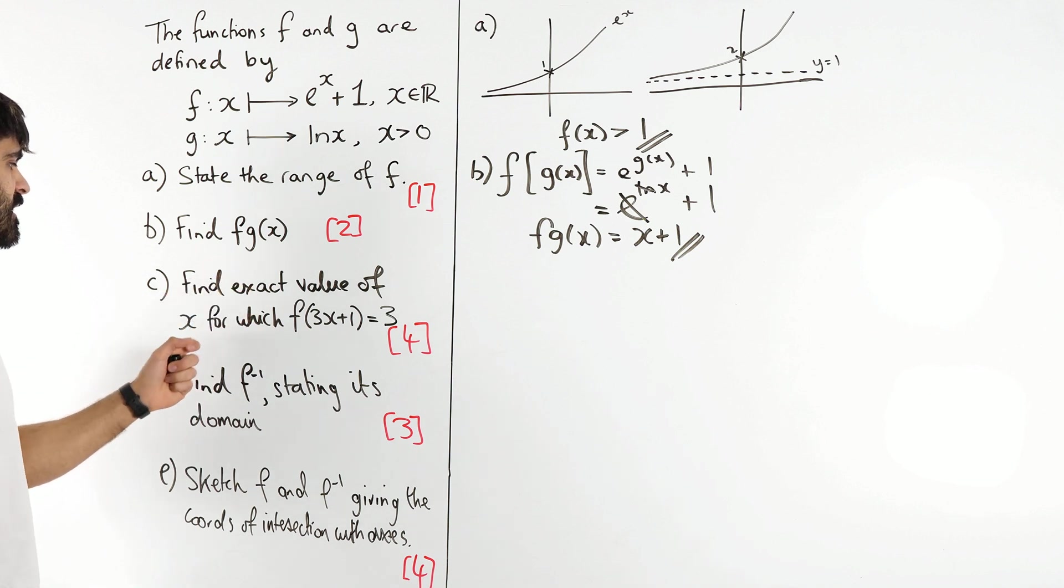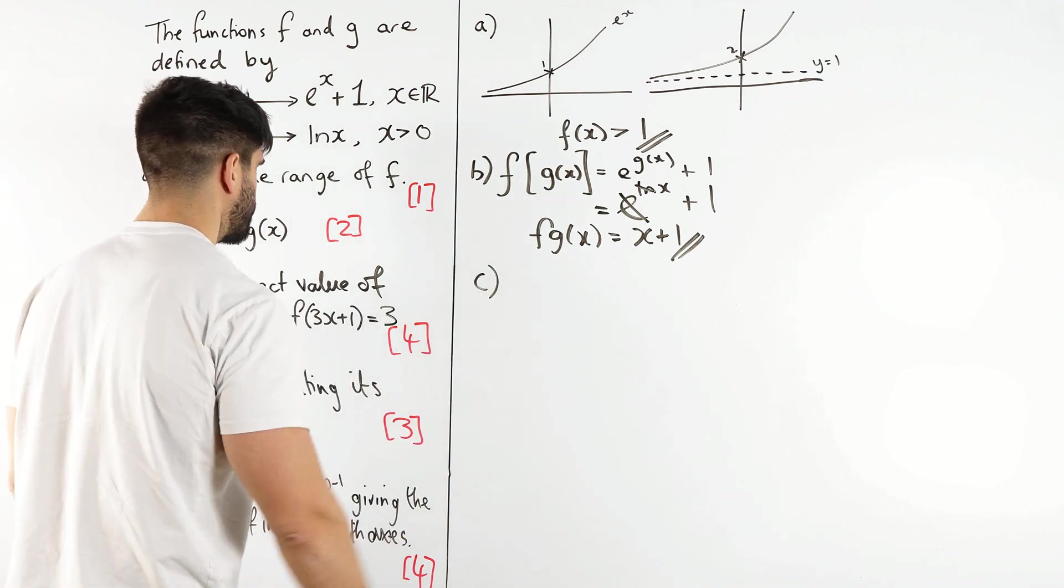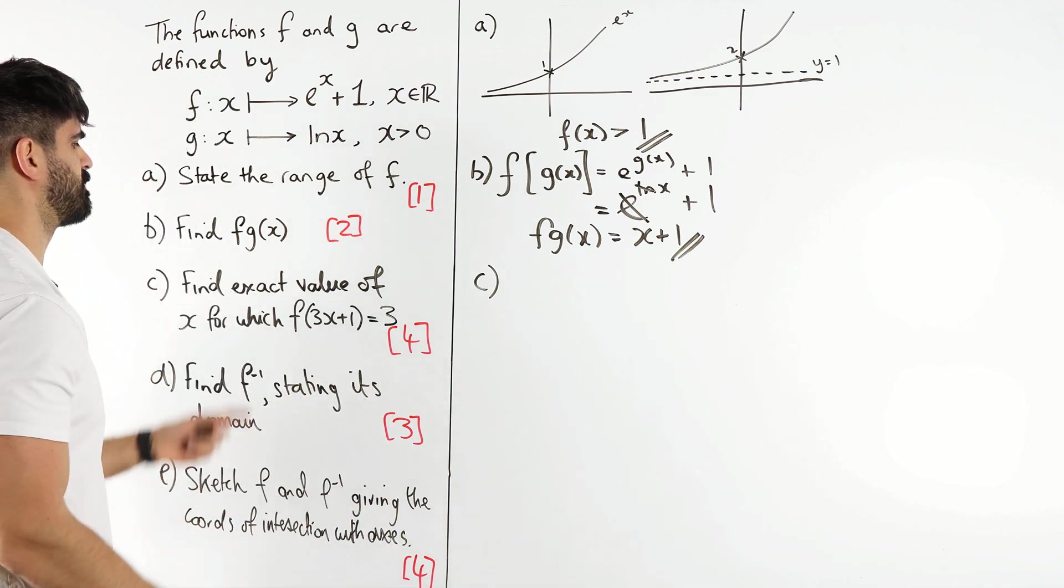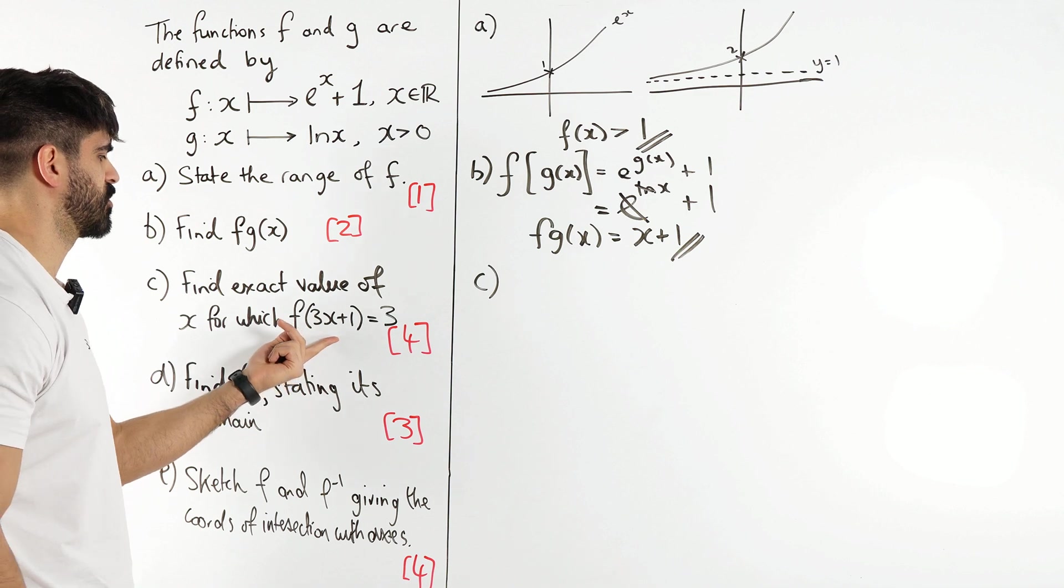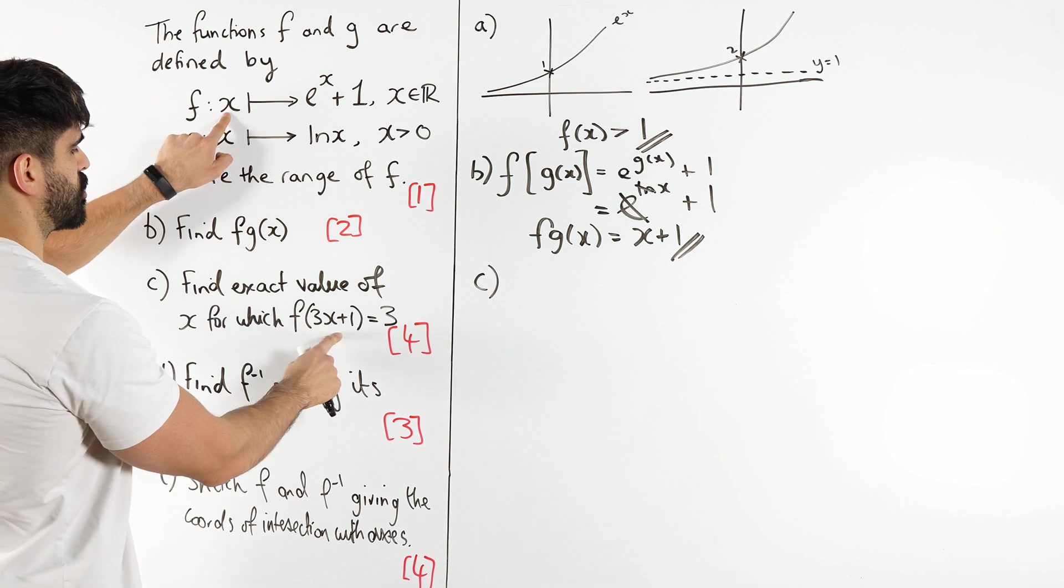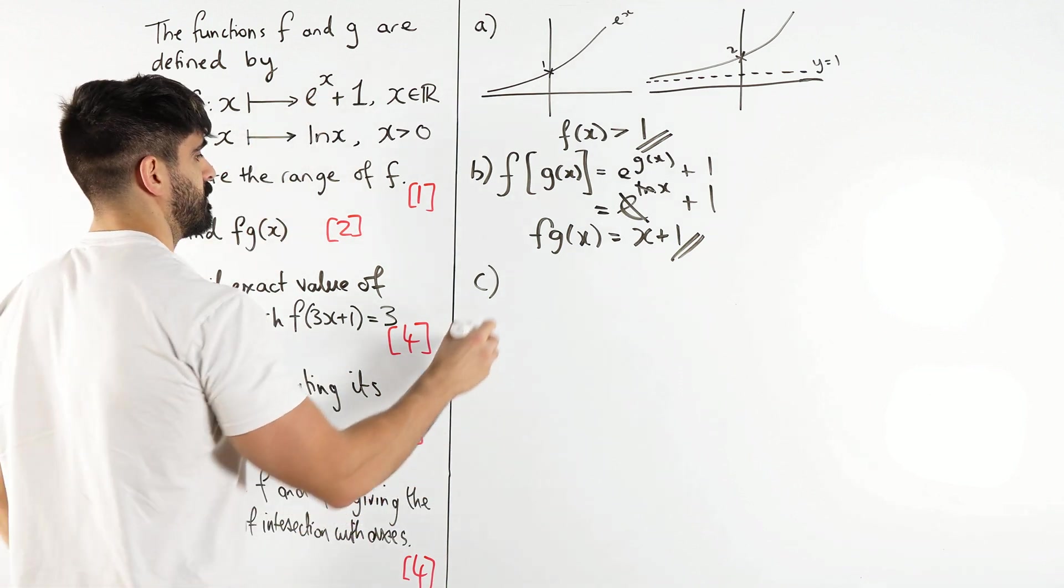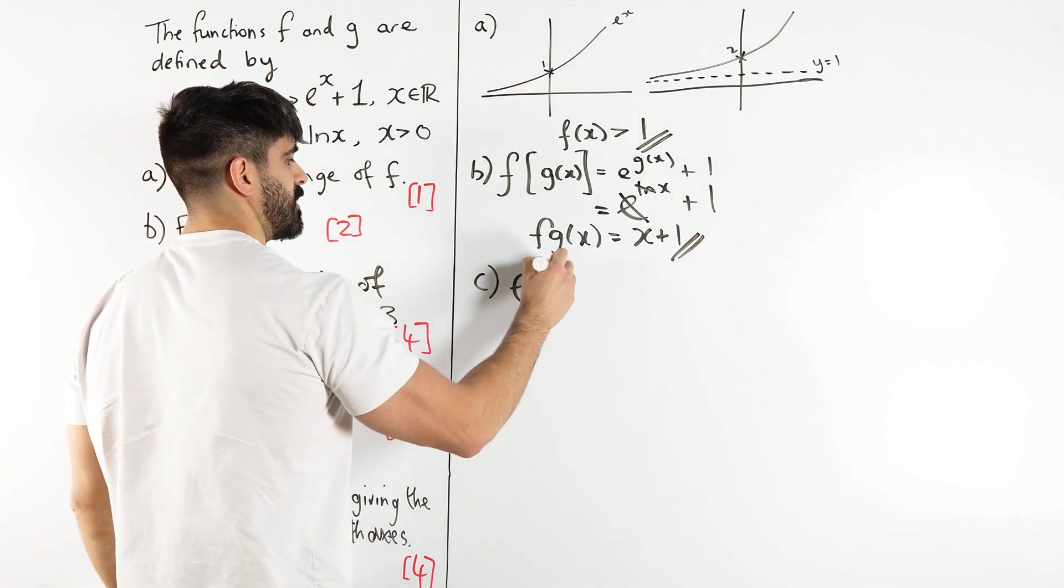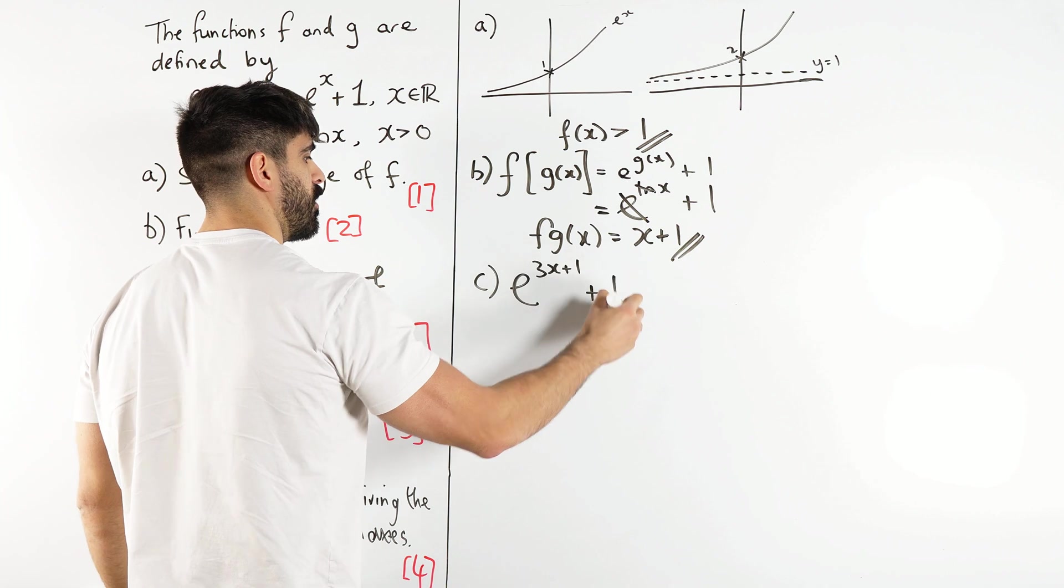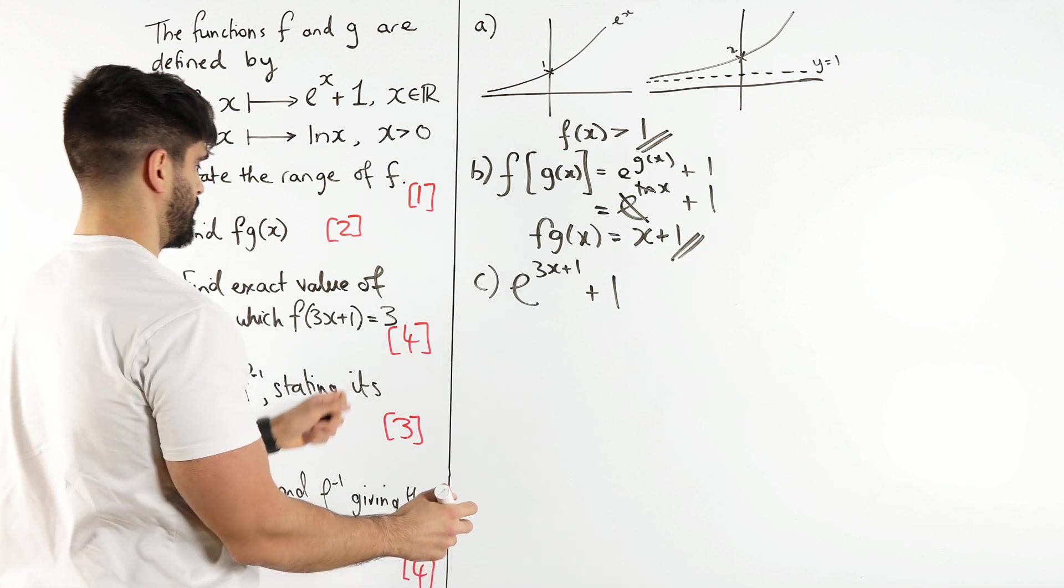Part C. Find the exact value of x for which f(3x + 1) = 3. f of 3x + 1, we've just basically done this. It's kind of like a composite function as well, it's a transformation. Wherever you see x, you're changing it to 3x + 1. So e^(3x + 1) + 1 = 3.